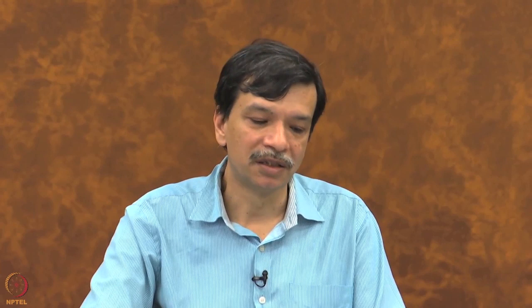Another mode of choice is voting, where every individual votes on the project. This rule does not need unanimity, making it more flexible than the Pareto condition. However, majority rule cannot take into account the intensity of preferences, and majorities may decide things that are not necessarily correct in terms of principles of natural justice.